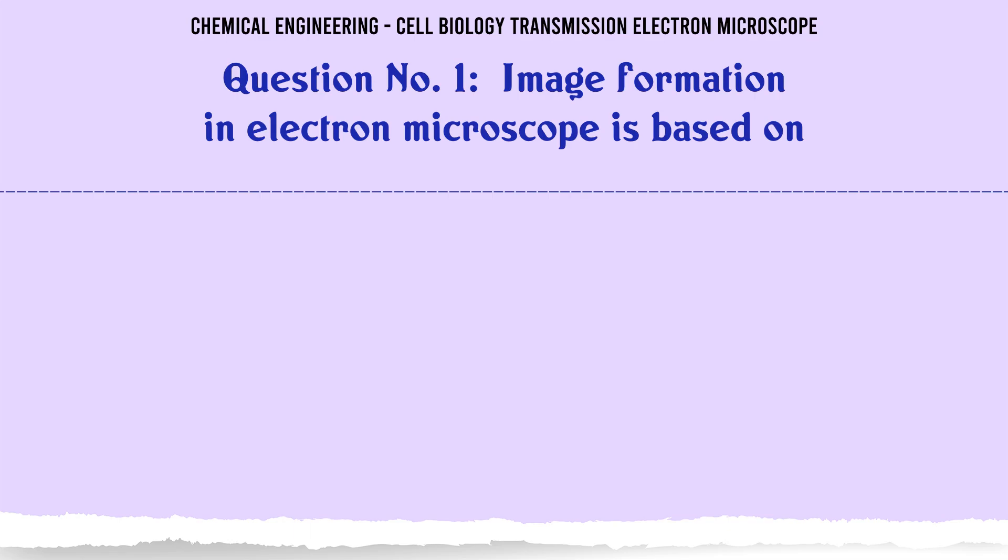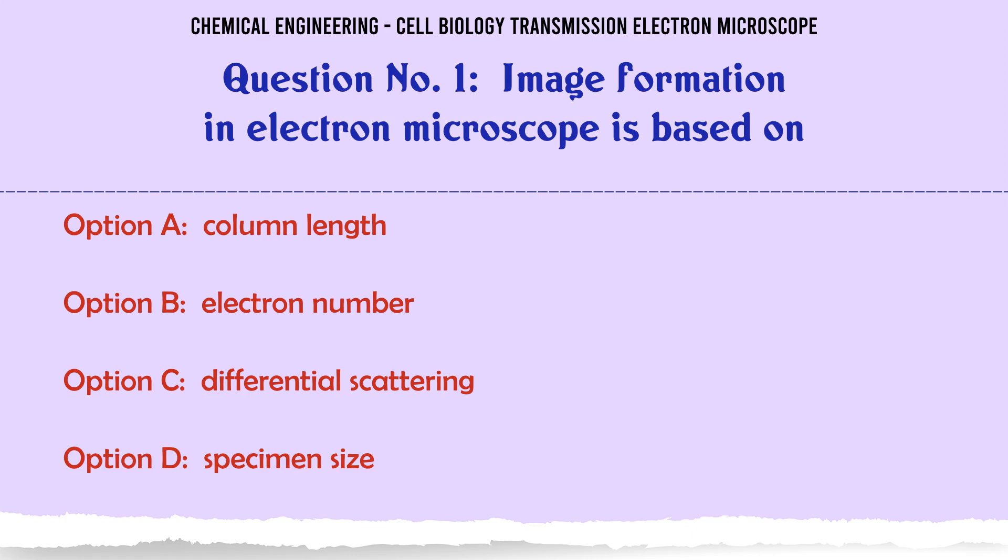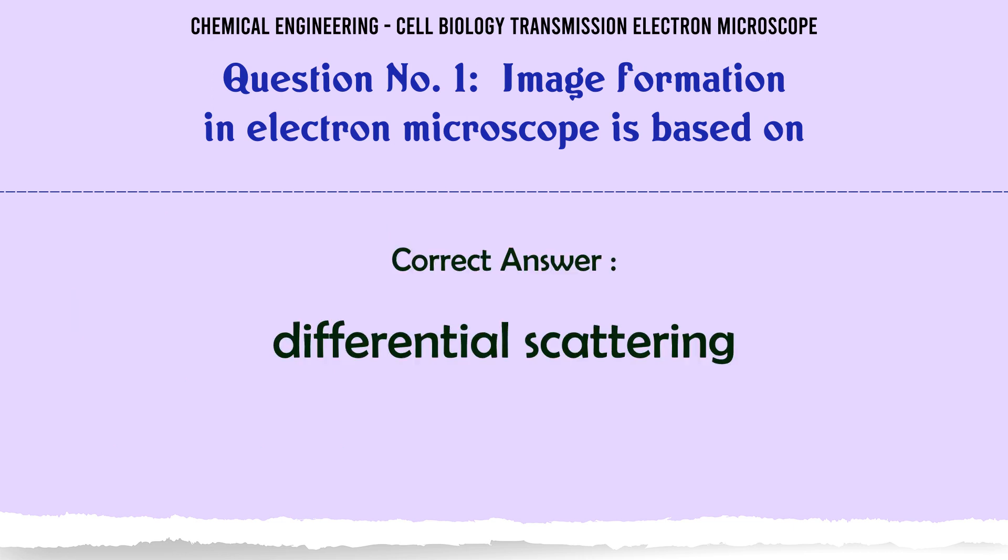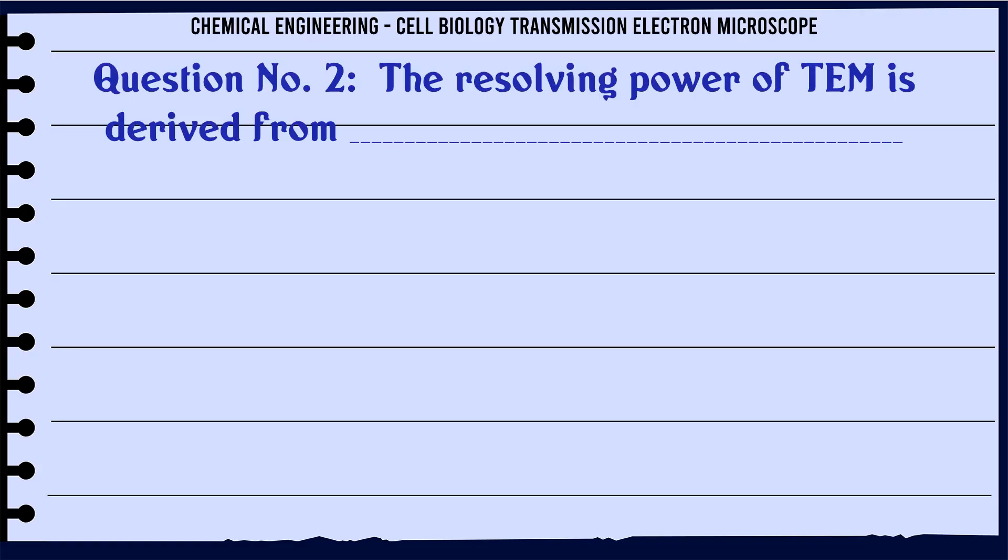Question 1: Image formation in electron microscope is based on: A. Column length, B. Electron number, C. Differential scattering, D. Specimen size. The correct answer is differential scattering.